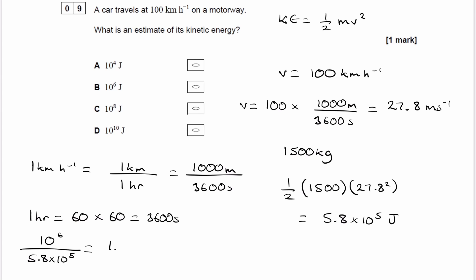I get about 1.7. And if I were to do 5.8 times 10 to the power of 5 divided by 10 to the power of 4, this gives me 58.